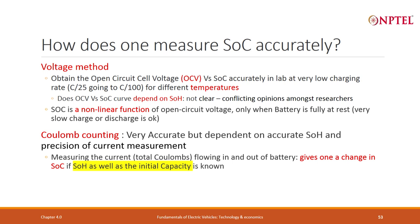Measuring the total current flowing in and out only gives you a change of SOC. It does not give you the absolute value of Coulombs — and that is only if state of health and the initial capacity are known. There also it will only give you a change. So the reference point is missing in the Coulomb count. You have to assume that your initial reference point was okay.